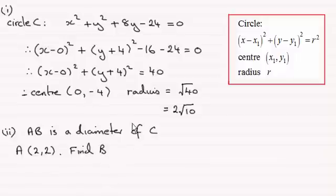So from the previous part, remember that the centre of the circle is at (0, -4). So what I'm going to do is draw a sketch. It's going to be a lot easier if we just draw a sketch of the circle.